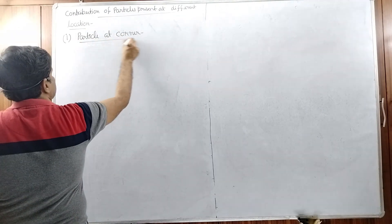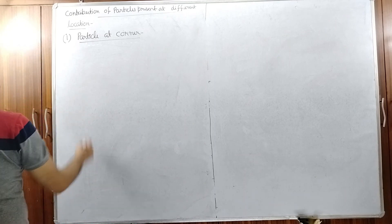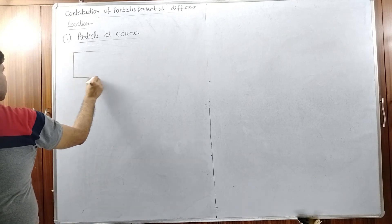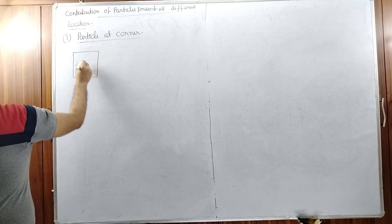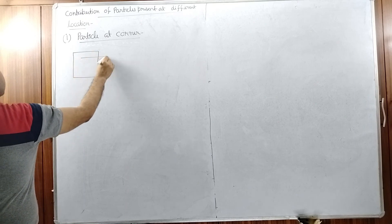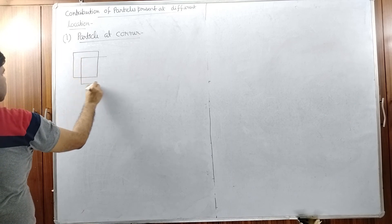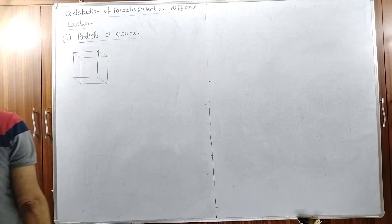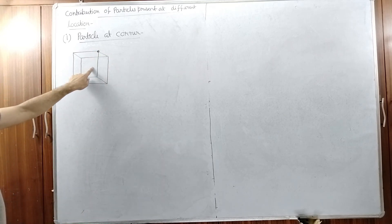First, consider the particle at the corner. The particle which is present at the corner is actually part of eight unit cells. If we consider one particular corner particle, this is one unit cell.